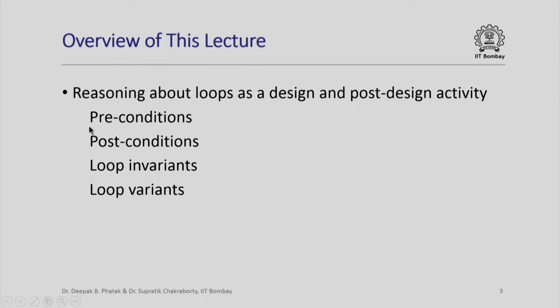In that context we are going to learn about preconditions of loops, postconditions of loops, loop invariants, and loop variants. These play a very important role when you try to reason about loops before you have written down your program — when you are trying to plan it out — or even after you have written your program, if you want to make sure that the loop is indeed doing what it is intended to do.